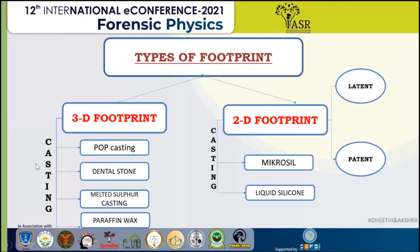Now let's discuss the casting methods for footprints. There are four main methods. Two are used in soil and two are used in snow. The main difference between POP casting and dental casting is that dental casting is stronger, does not need any reinforcement, and can also be used for underwater casting.